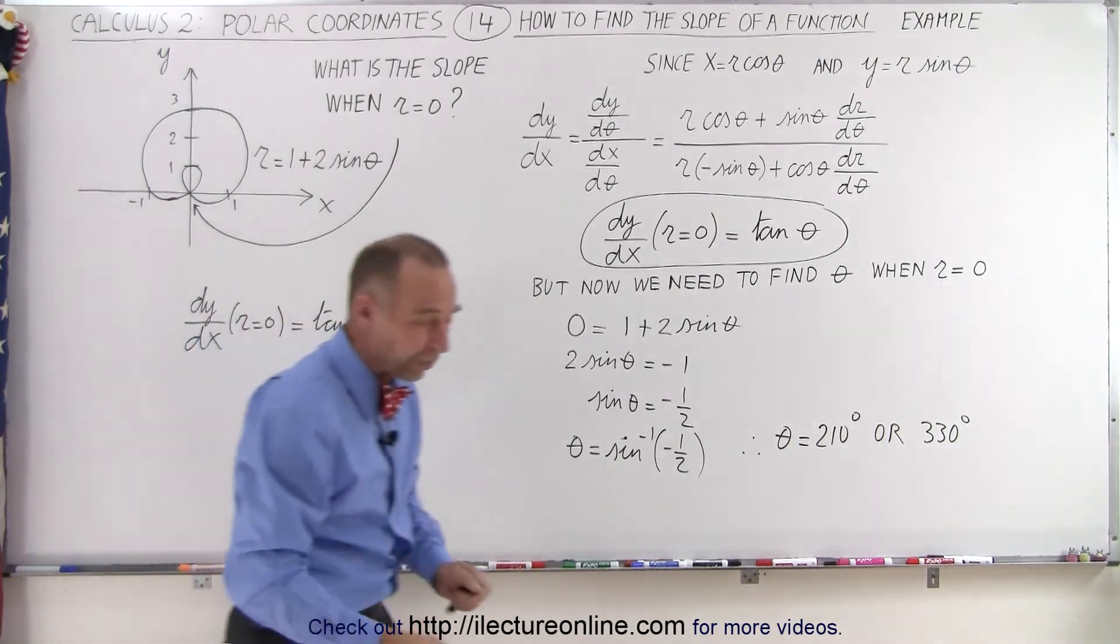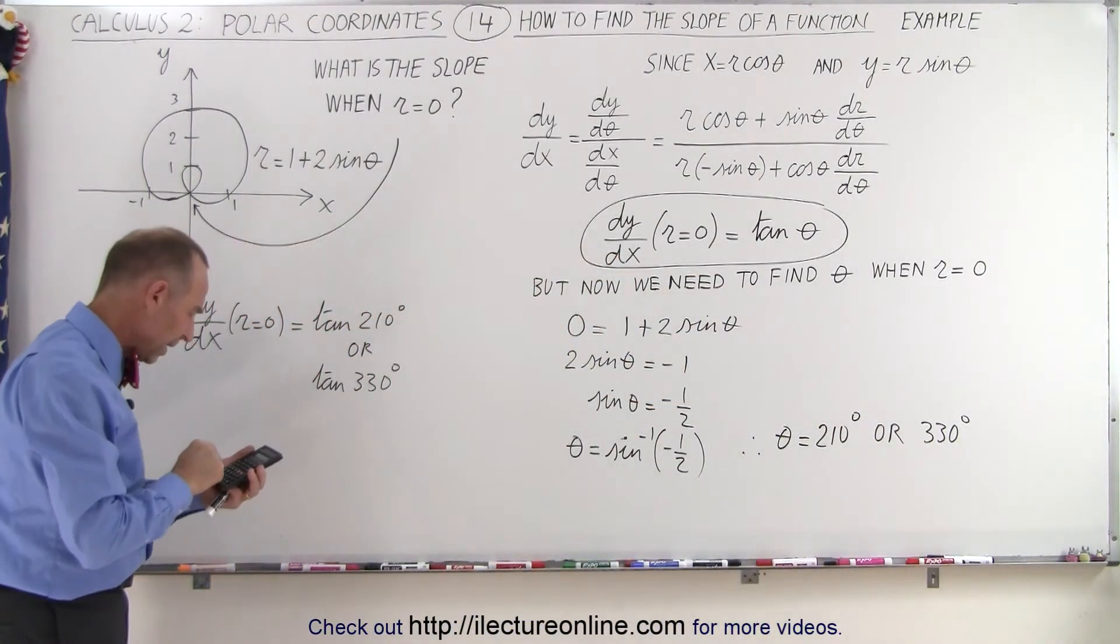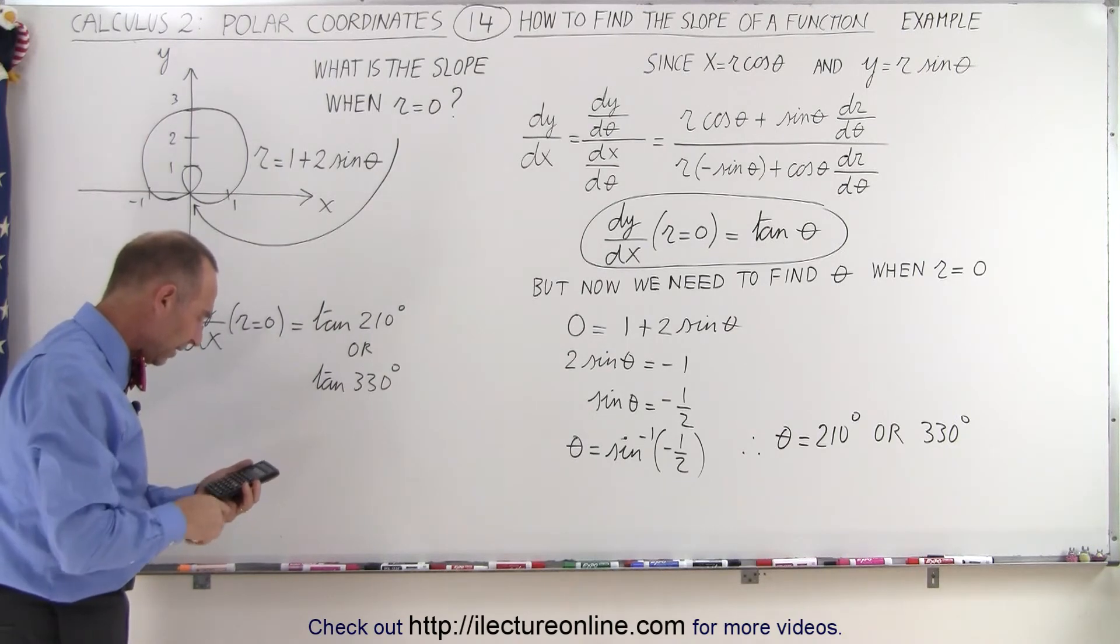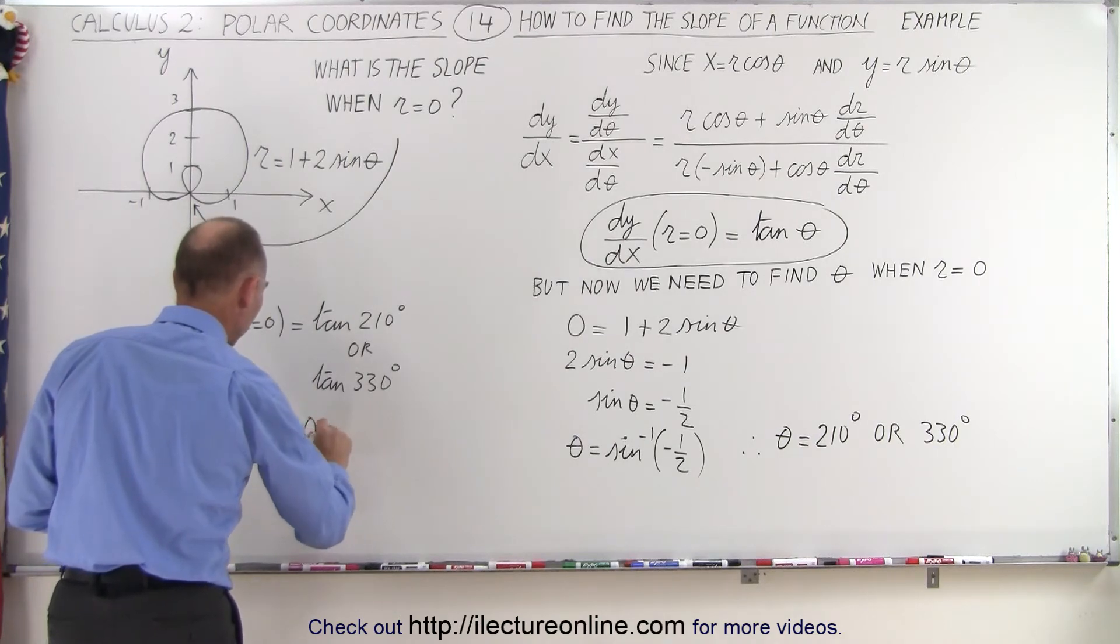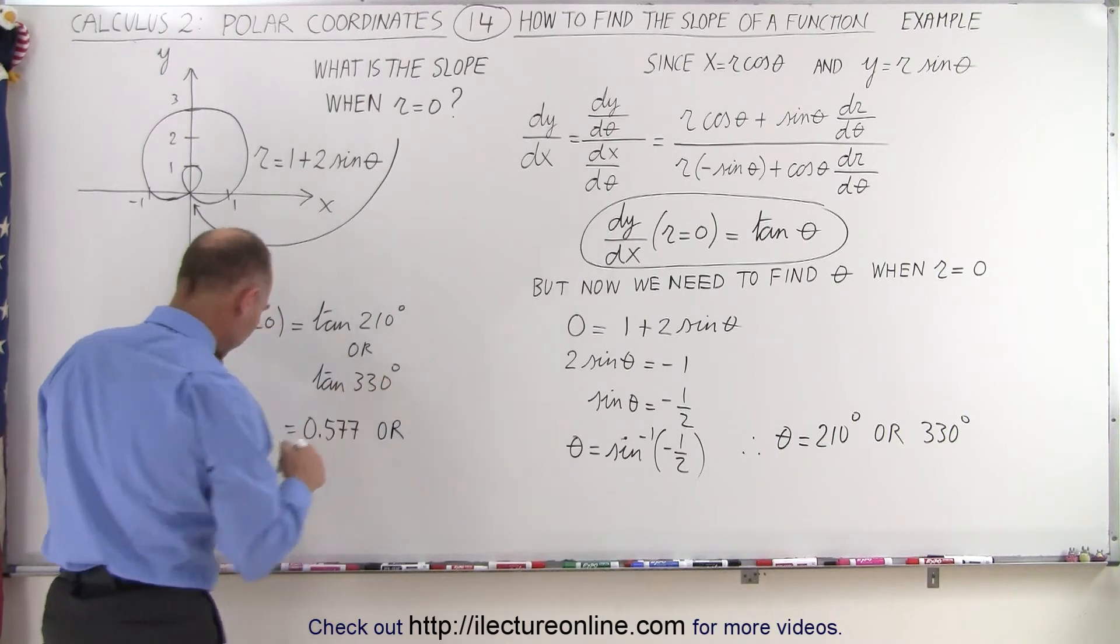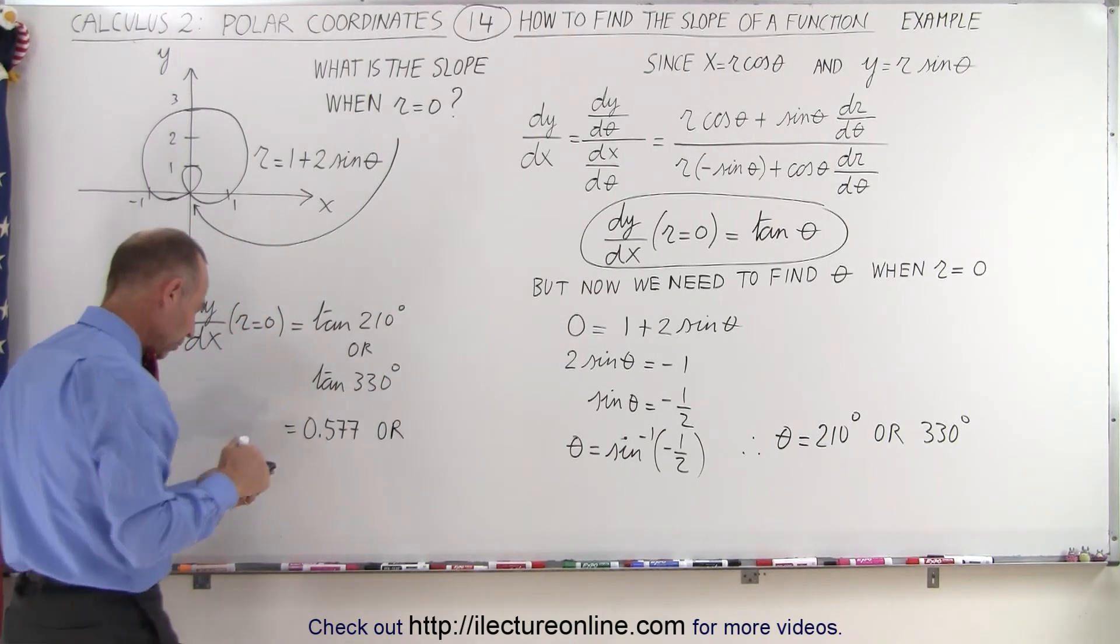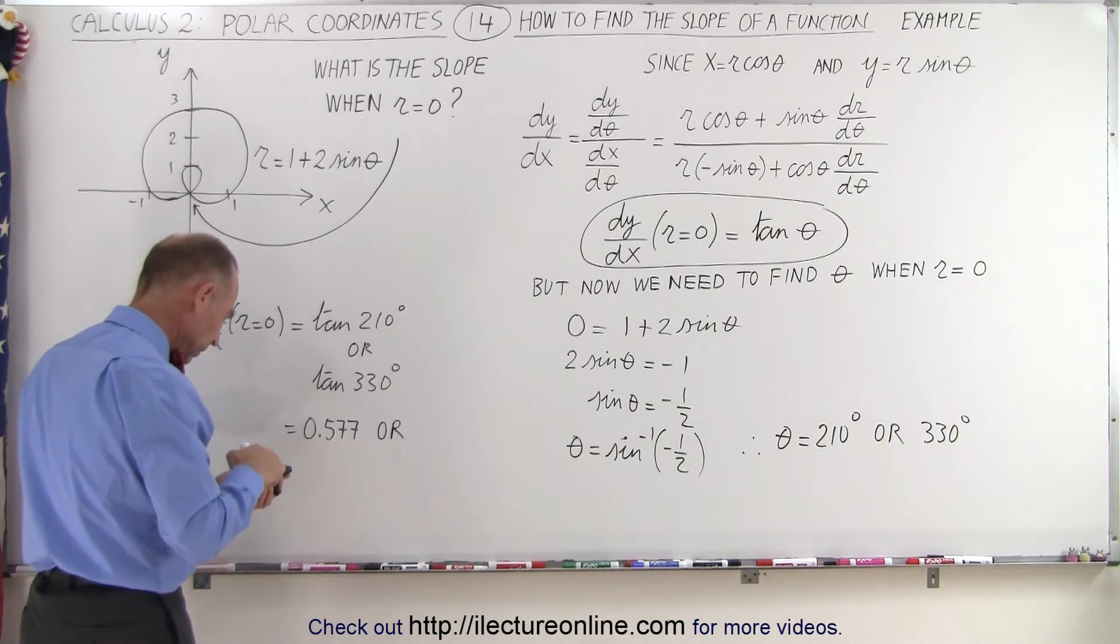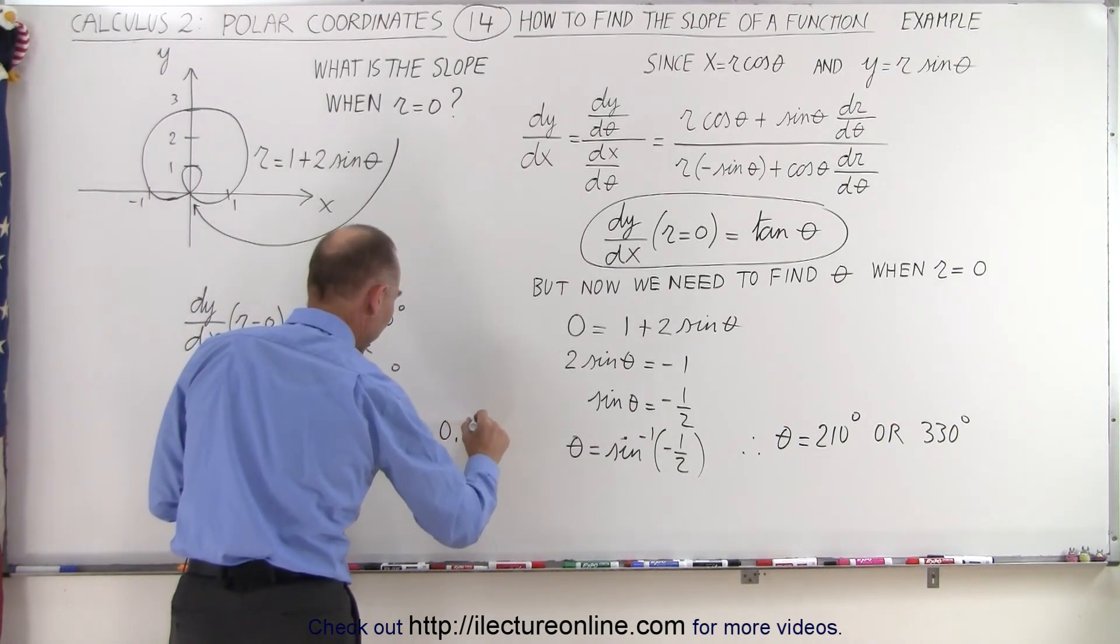So now we need a calculator to figure out what the slope is at those two locations. We take 210, take the tangent of that, that gives us 0.577. So this is equal to 0.577. Or when you plug in 330, that should be the negative of that number. Let me do it again. 330, take the tangent, sure enough, negative 0.577.